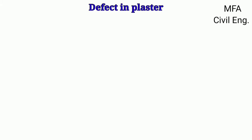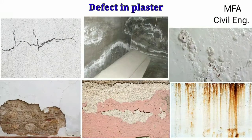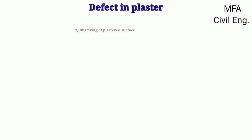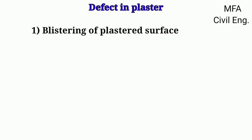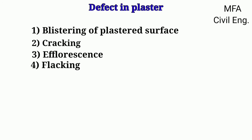Hello everyone, my name is Fazal, you are watching MFA Civil Engineering. The various defects which arise in plastering are: blistering of a plaster surface, cracking, efflorescence, flaking, peeling, popping, rust stains, and uneven surface.